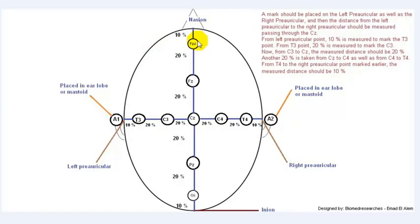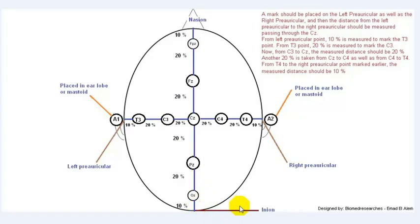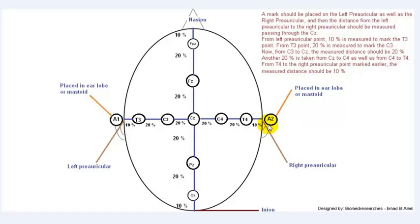By now we have finished the central zone electrodes from nasion to inion, and from left auricular to right auricular. To review: a mark is placed on the left and right auricular points, and the distance between them is measured passing through CZ. From the left auricular, 10% marks T3; from T3, 20% marks C3; from C3 to CZ is 20%. Another 20% goes from CZ to C4, and from C4 to T4; from T4 to the right auricular should be 10%.